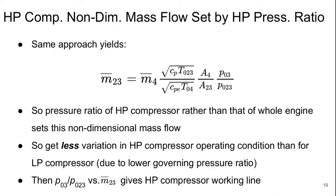Basically, the pressure ratio of the high-pressure compressor, rather than that of the whole engine, is what sets this non-dimensional mass flow. So, this means we get less variation in high-pressure compressor operating condition than we do for the low-pressure compressor. Basically, because it's got a lower governing pressure ratio. Then we can get the high-pressure compressor working line from plotting a locus of P03 over P023 versus M bar 23.